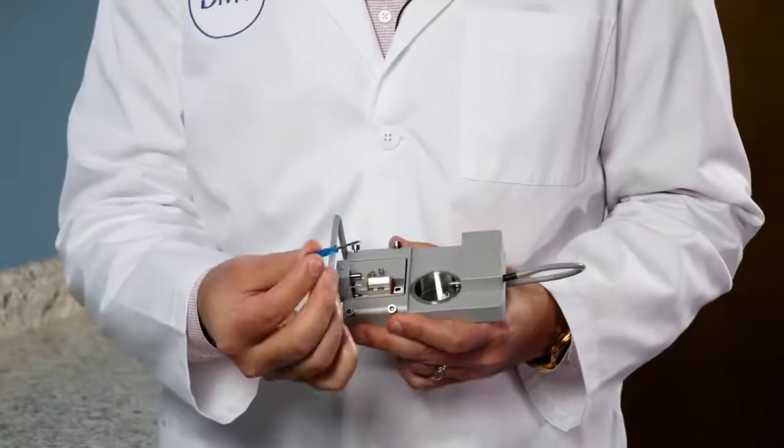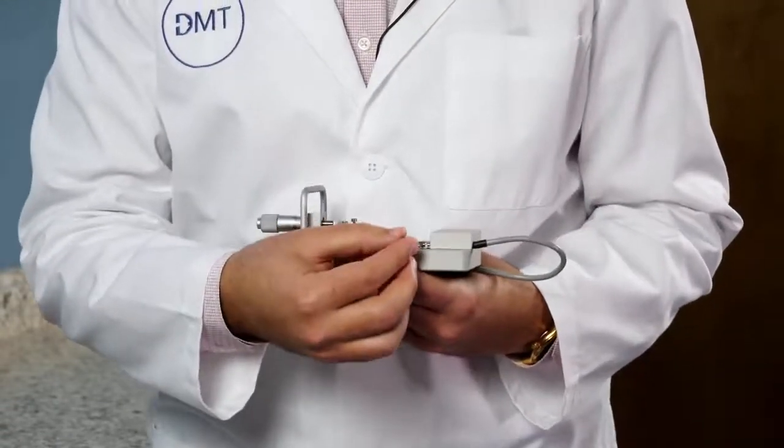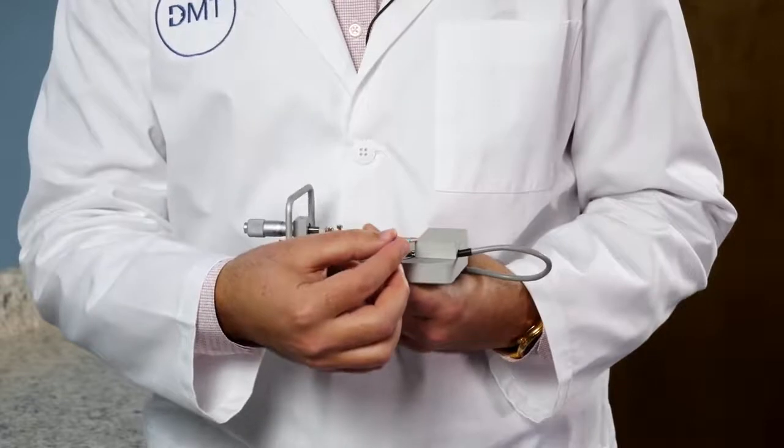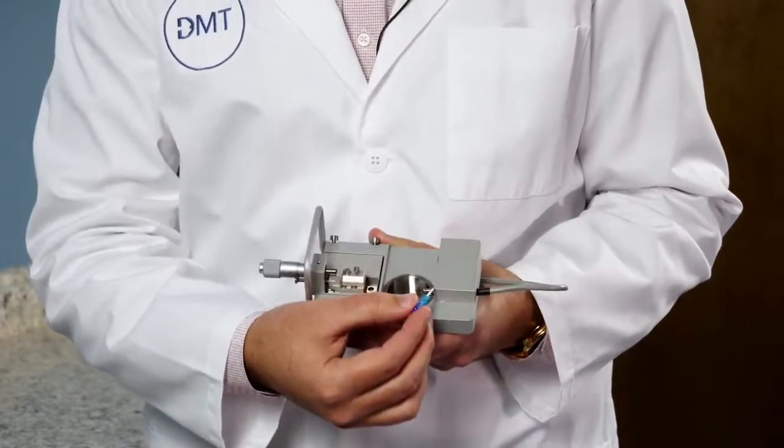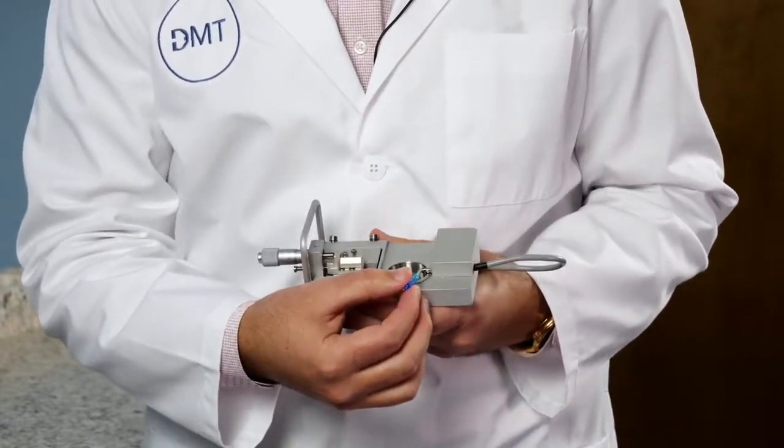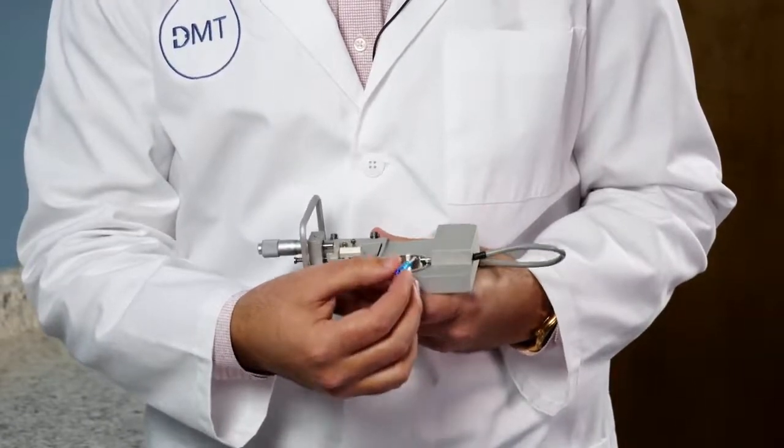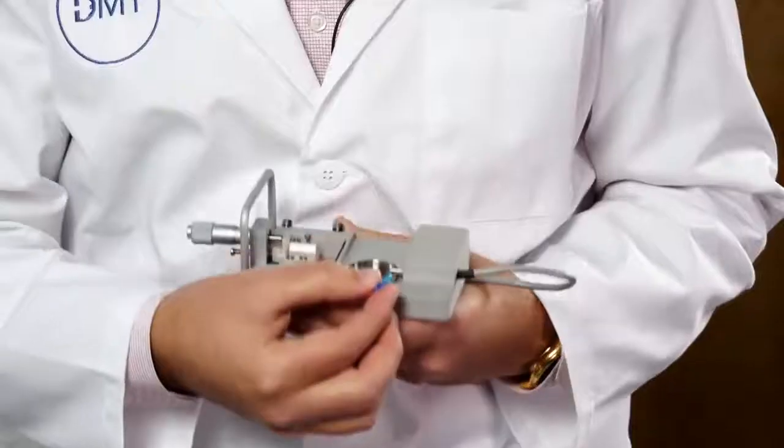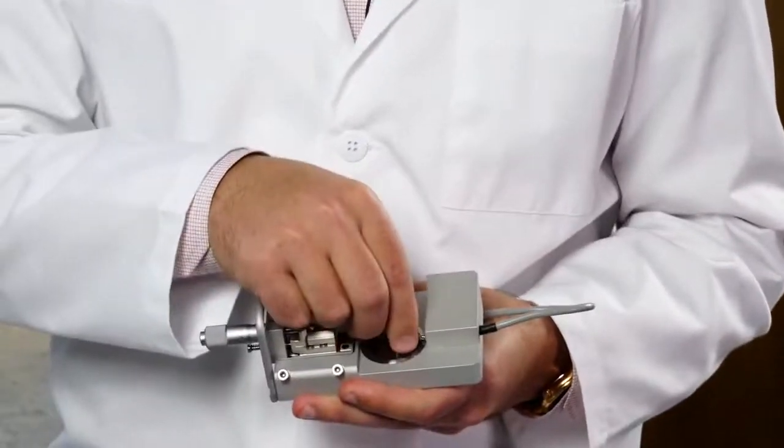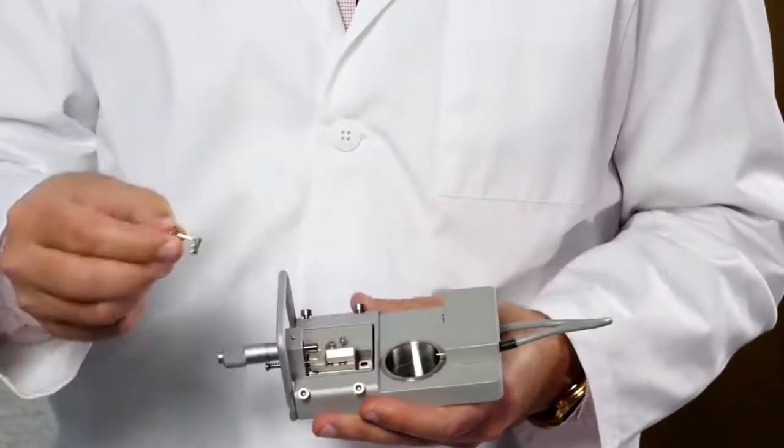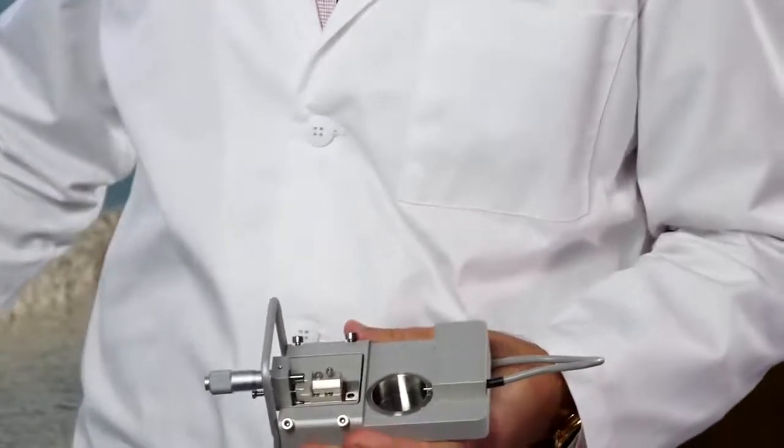Then you will need to take your small screwdriver and loosen the back screw that's closest to the force transducer. Now you'll need to be careful when doing this as you do not want to put extra pressure on the transducer itself. And then you can slide this jaw off the transducer arm and set that aside.